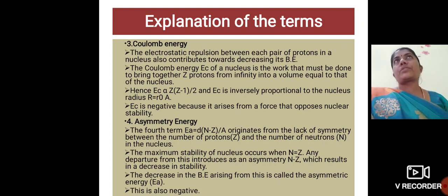The fourth one is the asymmetry energy. The fourth term originates from the lack of symmetry between the number of protons and the number of neutrons in the nucleus. The maximum stability of nucleus occurs when N is equal to Z. Any departure from this introduces an asymmetry N minus Z which results in a decrease in stability. The decrease in the binding energy arising from this is called the asymmetry energy. This is also a negative quantity.